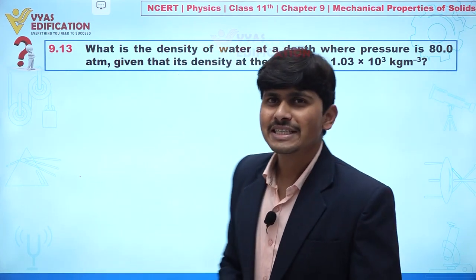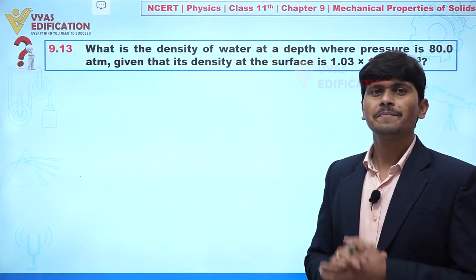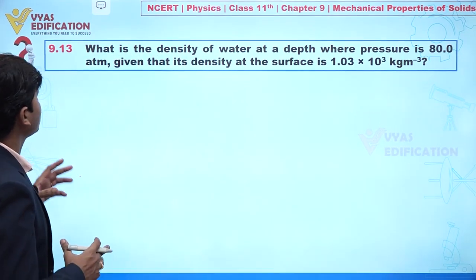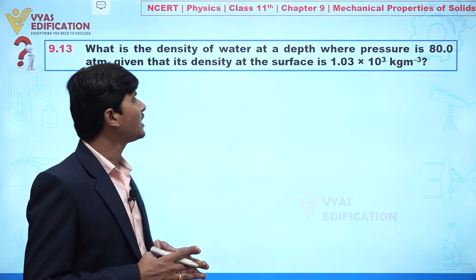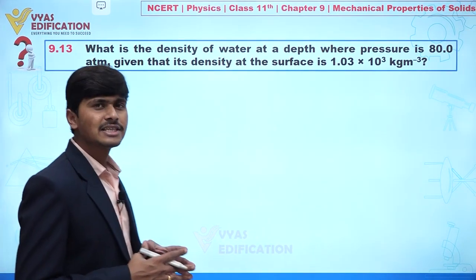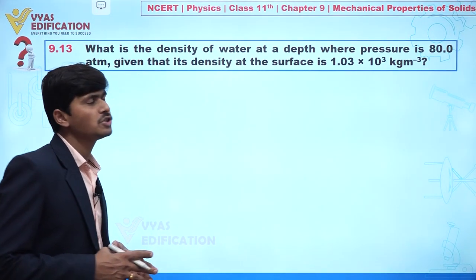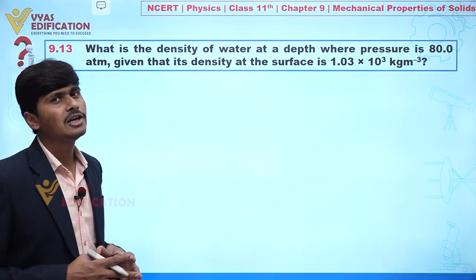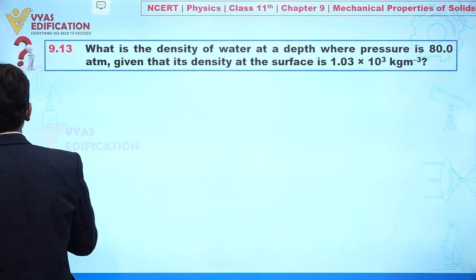We are going to discuss question number 9.13. In this question it is given: what is the density of water at a depth where pressure is 80 atm, given that its density at the surface is 1.03 × 10³ kg/m³.